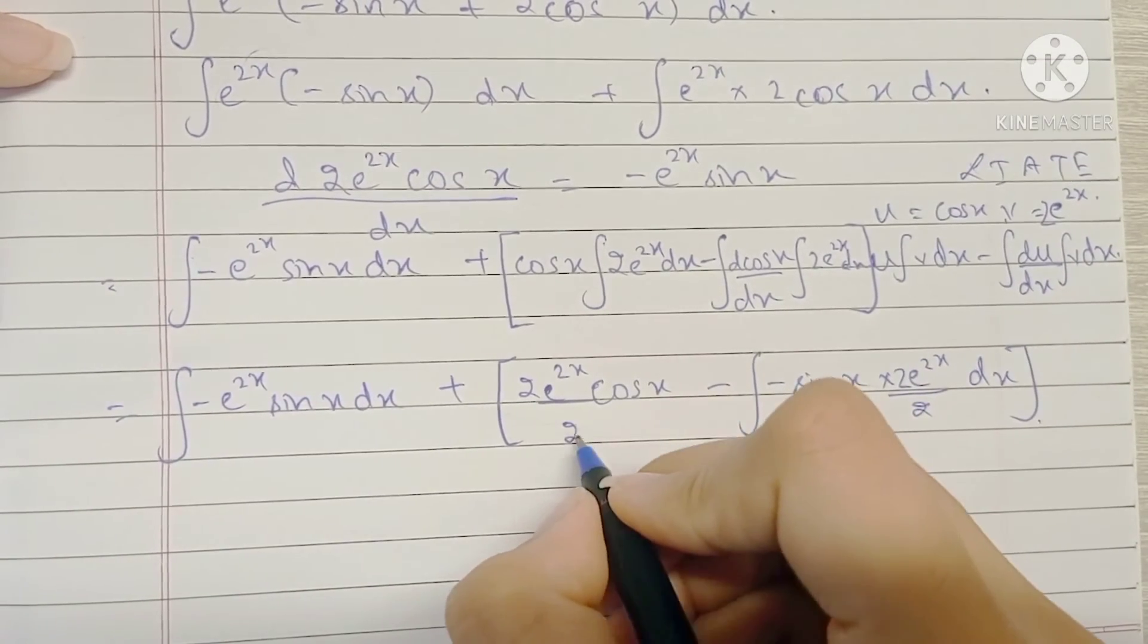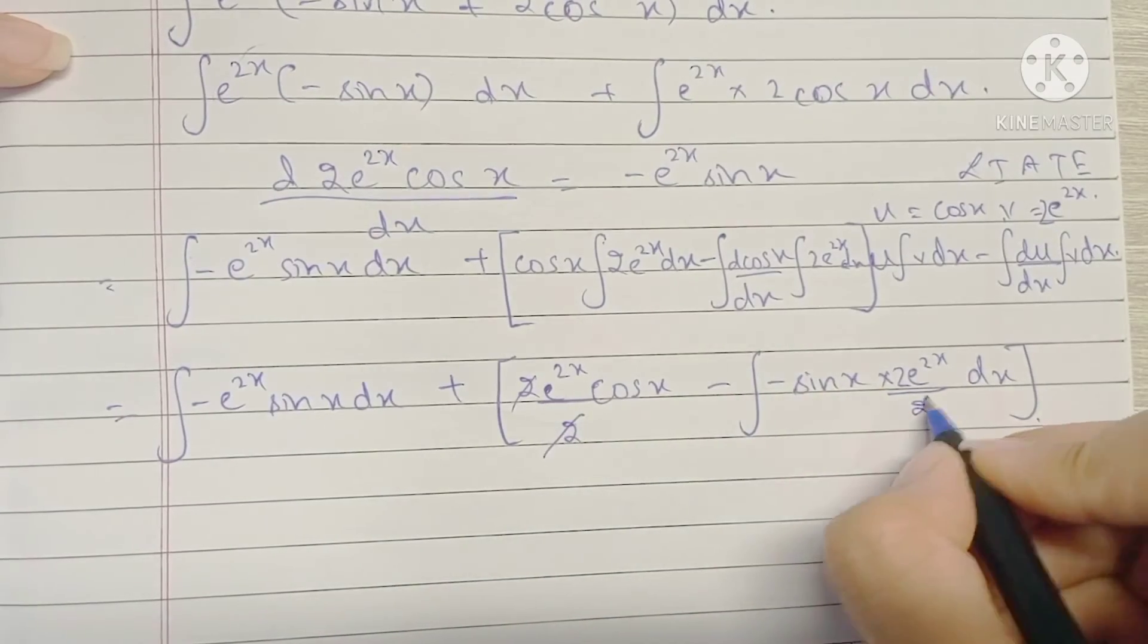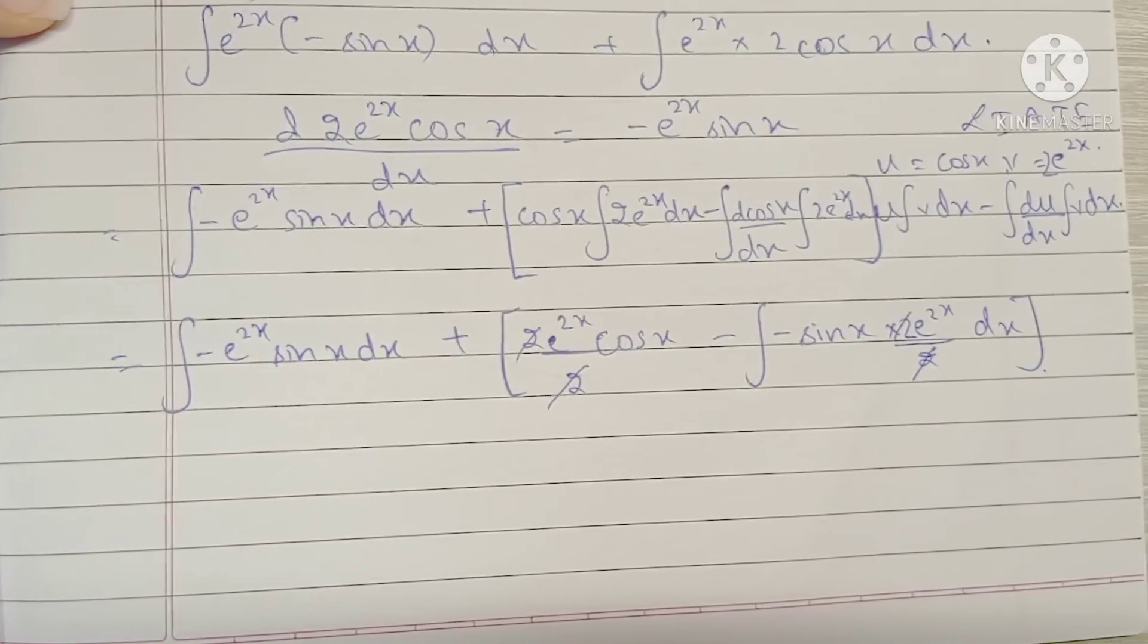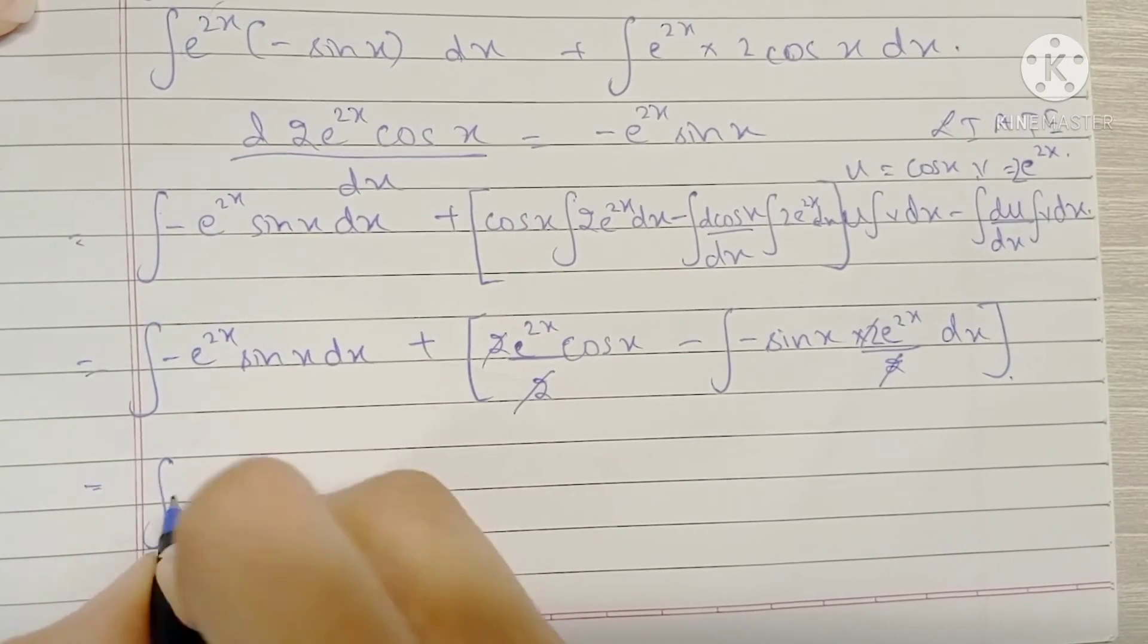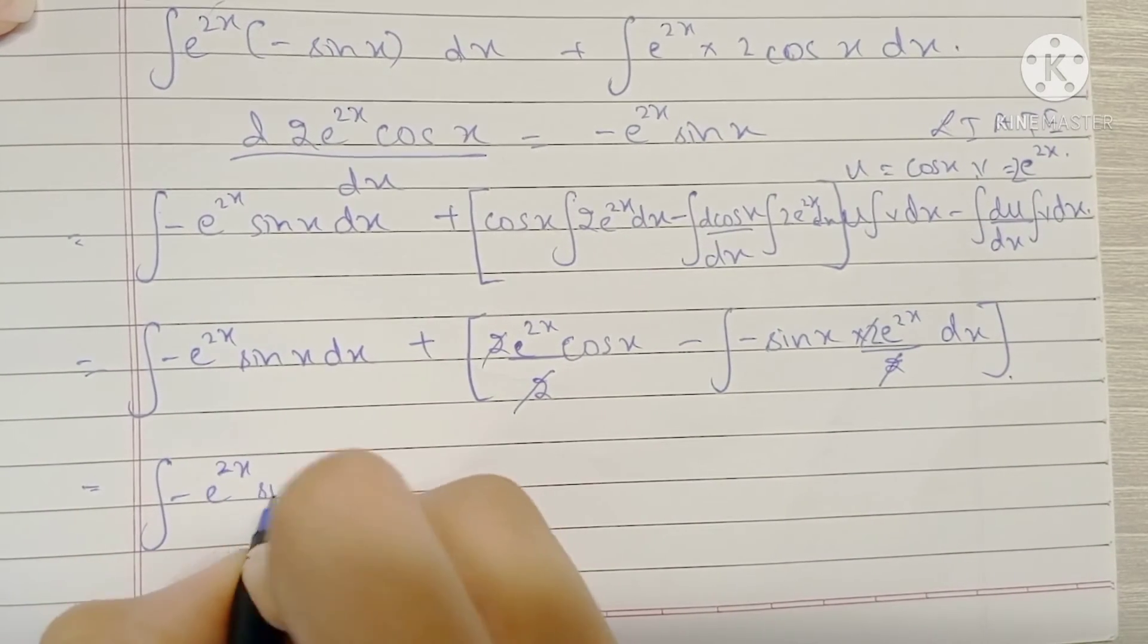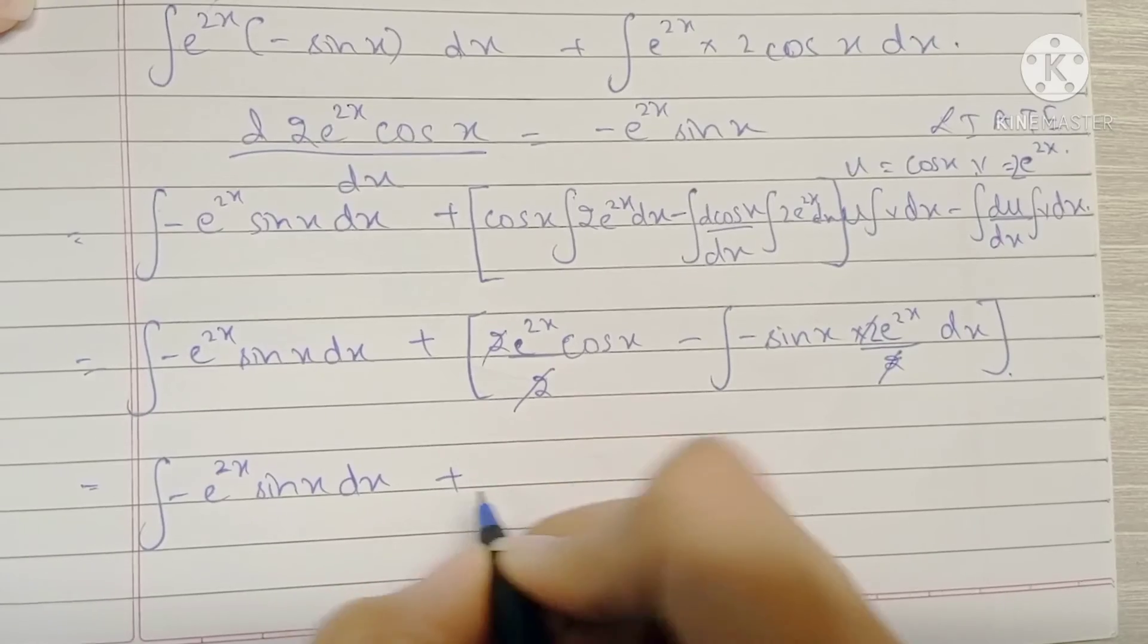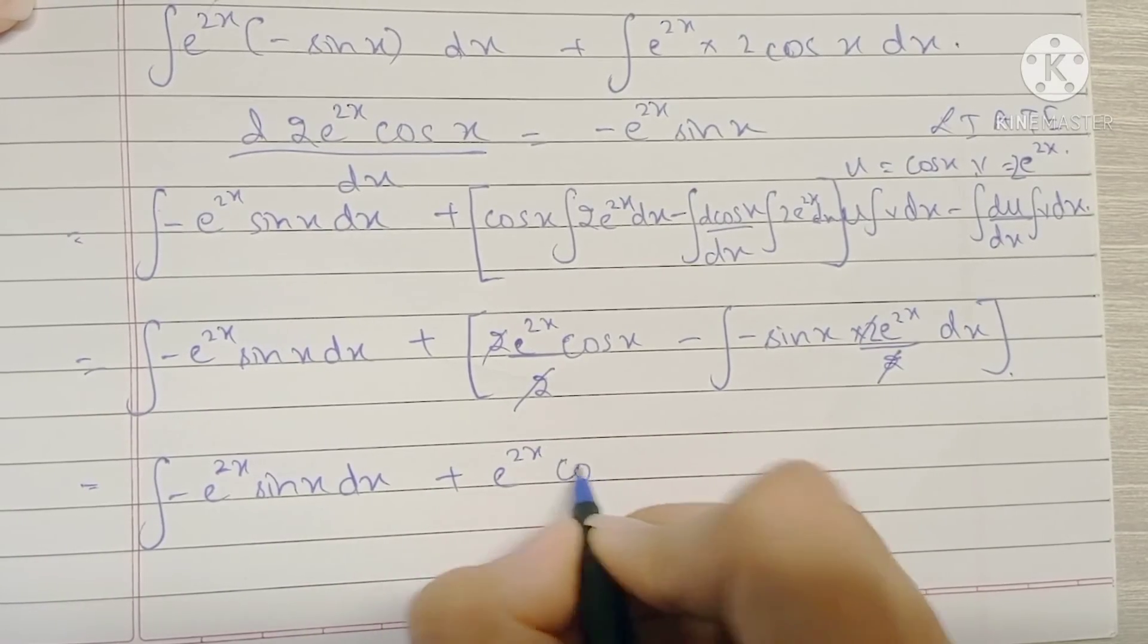Okay, so as you can see 2 and 2 gets cancelled and again 2 and 2 gets cancelled over here. So we are left with the integral of minus e raised to 2x sin x plus e raised to 2x cos x plus c.